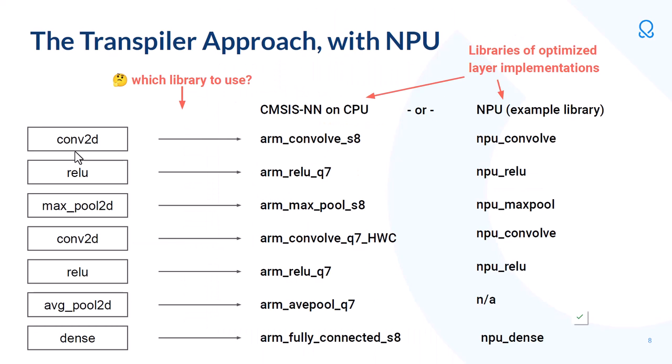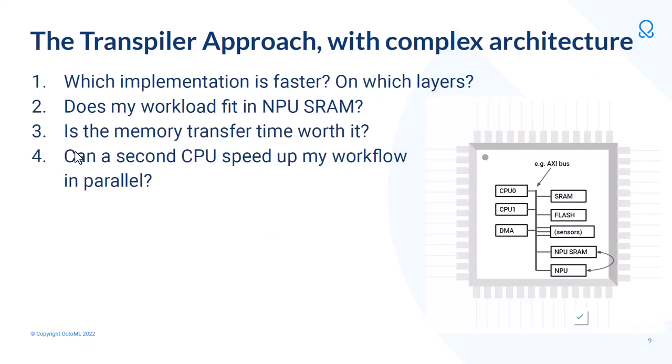Also coming soon are heterogeneous compute architectures, where accelerators live in the same system as a CPU and can work together to achieve faster inference. Our transpiler approach just got a lot more complicated, because now we have two libraries to choose from. For each layer in the model, we have to decide which library to use. For smaller layers it might be faster to use the CPU, whereas larger layers might be faster to offload to an accelerator.